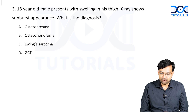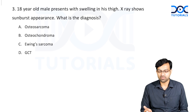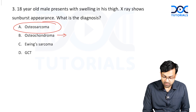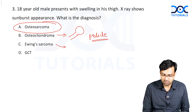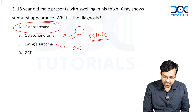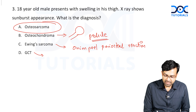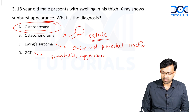Question 3: An 18-year-old male presents with swelling in his thigh. X-ray shows a sunburst appearance. What is the diagnosis? The answer is osteosarcoma. In contrast, osteochondroma shows a swelling with a pedicle and expanded end. Ewing's sarcoma shows a diaphyseal tumor with an onion peel periosteal reaction. GCT shows an epiphyseal lesion with a classical soap bubble appearance. So the correct answer here is osteosarcoma.